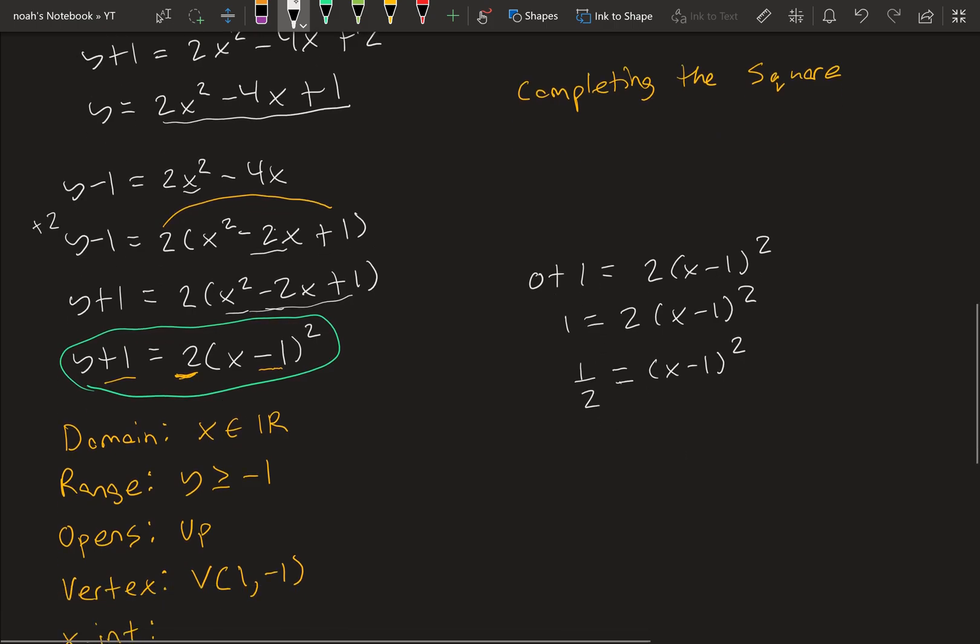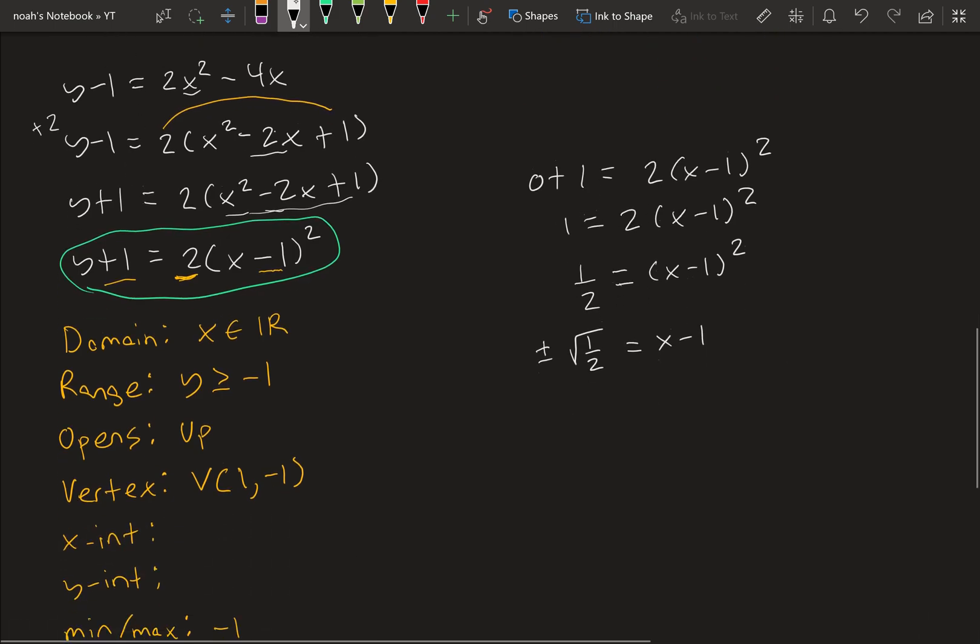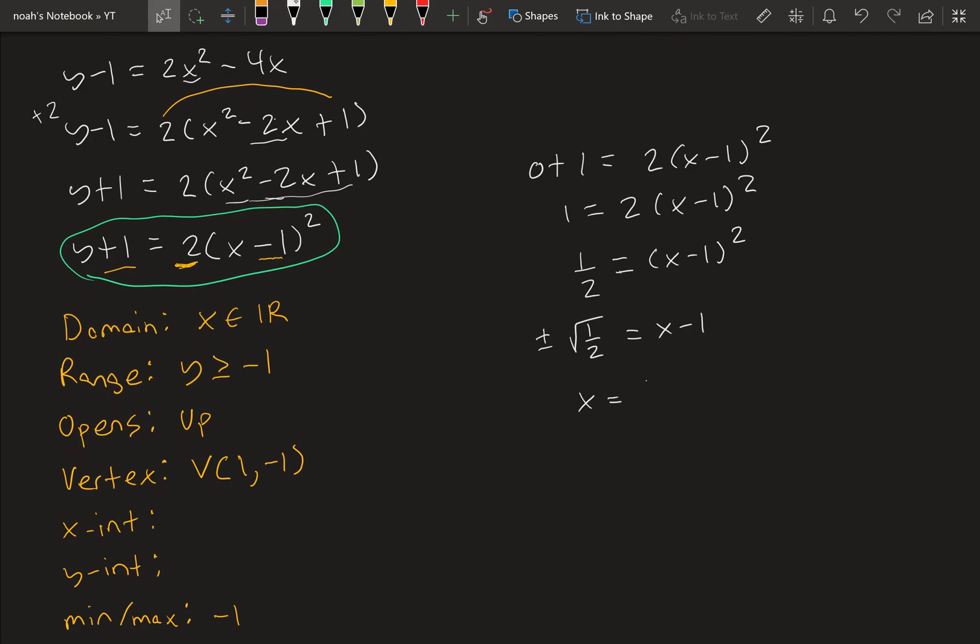And square root both sides, square root of 1 half. We have to add this plus or minus term because if something's squared, for example, negative 2 and plus 2 squared is both 4. So we need this plus or minus here. Plus or minus square root of 1 half equals x minus 1. Lastly, x is equal to 1 plus or minus the square root of 1 half.